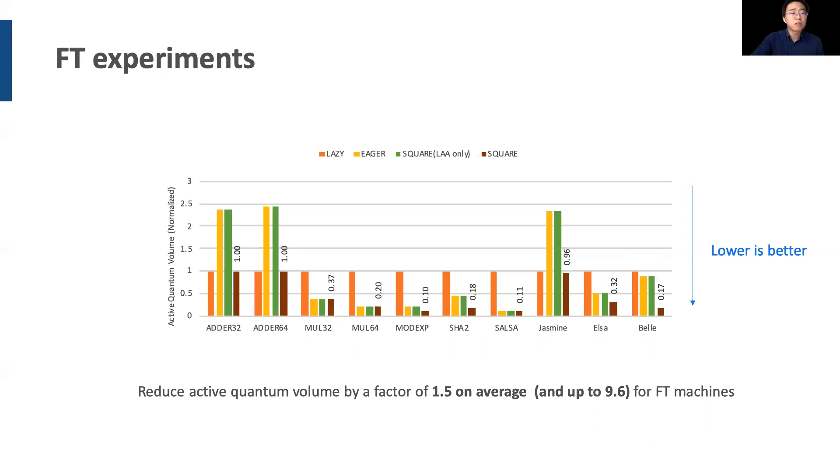The benefit of square algorithm is also clear for fault tolerant experiments. In this figure, lower active quantum volume means lower resource costs. By strategically reusing qubits, square reduces the overall resource costs by a factor of 1.5 on average, and 9.6 in the best case, with respect to the lazy baseline. Highlighted in green is the partial contribution from locality-aware allocation in square. We found that square can only consistently outperform other baselines when both locality-aware allocation and cost-effective reclamation are applied.